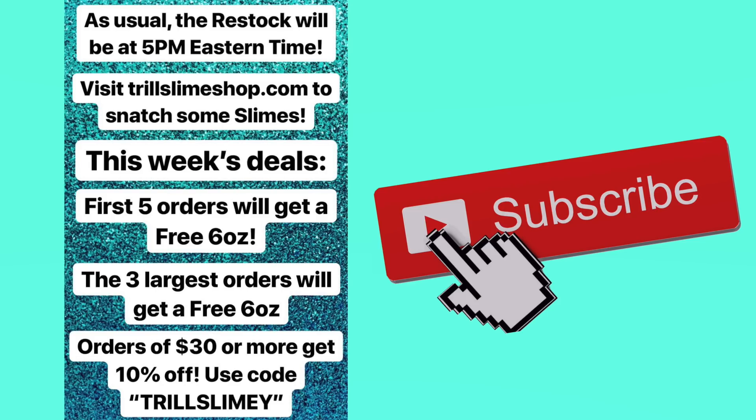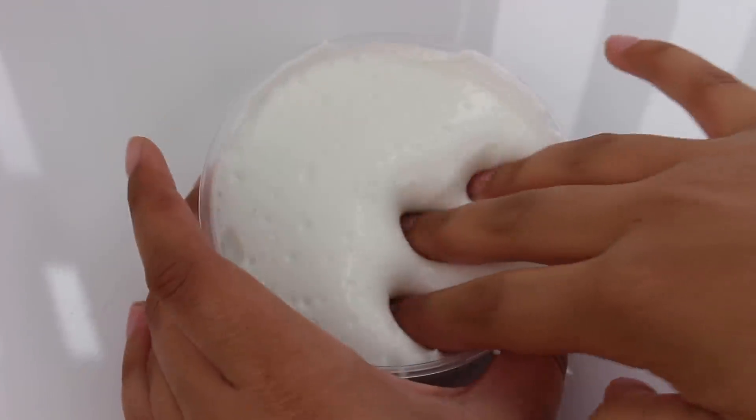We have a few deals going on in the shop this week. The first 5 orders will get a free 6 ounce slime, the 3 largest orders will also get a free 6 ounce, and orders of $30 or more will get 10% off using the code trillslimey. If you ever want to see longer videos of each slime, head over to my Instagram at trill.slime. Without further ado, let's get on to the restocking video.